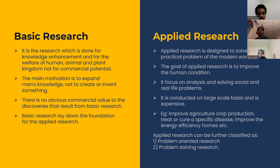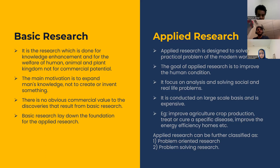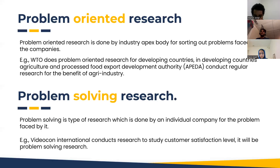Examples of applied research include improving agriculture and crop production, treating or curing a specific disease, or improving the energy efficiency of homes. Applied research can be further classified into two categories: problem-oriented research and problem-solving research. Problem-oriented research is most likely done in the industry.